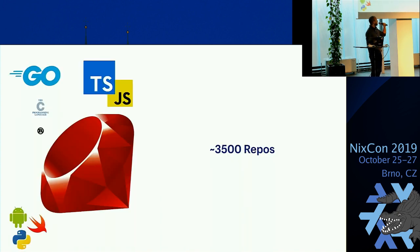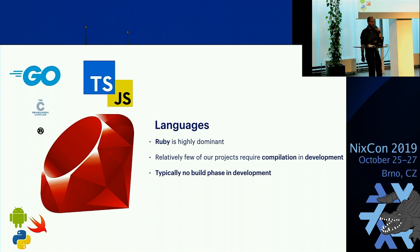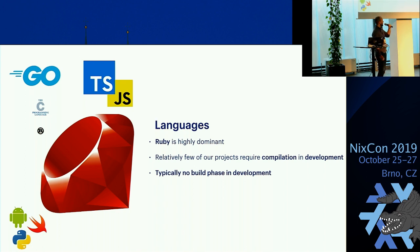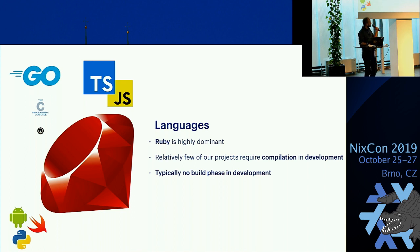That works in large part because most of our code is in Ruby, JavaScript — interpreted languages. Ruby is very dominant, especially in our older, more central codebases. Relatively few of our projects have any sort of compilation step; they all basically run from the source. The really critical core applications that hundreds or thousands of people work on are basically interpreted, meaning we have no build phase in development. That kind of informs the tools we build because we don't care so much about build systems.